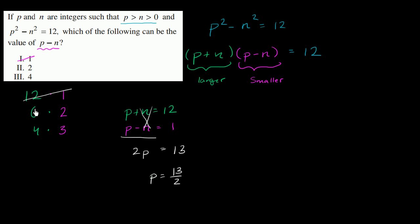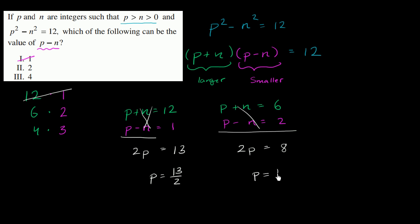Now let's think about the scenario where p plus n is equal to 6 and p minus n is equal to 2. Adding the left-hand sides gives 2p, and 6 plus 2 equals 8. Dividing both sides by 2, p equals 4. If p equals 4, then 4 plus n equals 6, so n equals 2. And 4 minus 2 equals 2 — this is completely consistent. Both are positive integers, p is greater than n, so p minus n equal to 2 is completely possible.